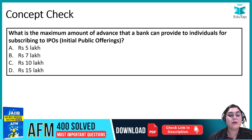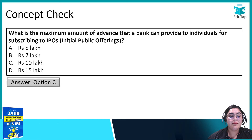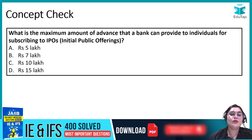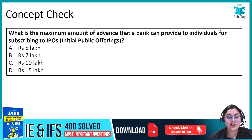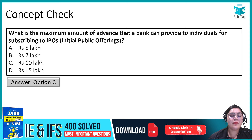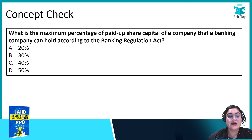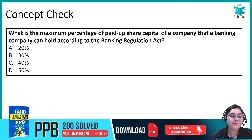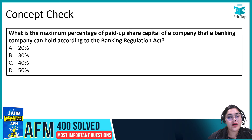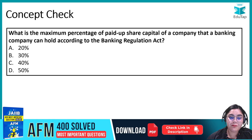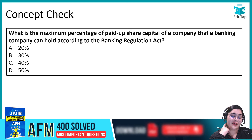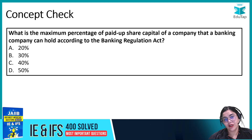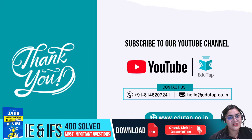The next question: What is the maximum amount of advance that a bank can provide to individuals for subscribing to an IPO? The answer is 10 lakh rupees. And the next question — which you should answer in the comment section — is: What is the maximum percentage of paid-up share capital of a company that a banking company can hold according to the Banking Regulation Act? Options are 20%, 30%, 40%, or 50%.